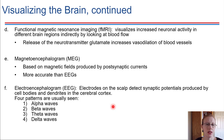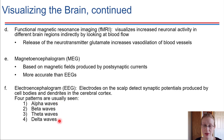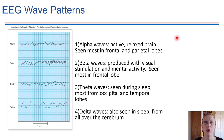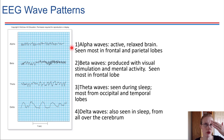EEGs allow us to see different brainwave patterns, and there are four characteristic brainwave patterns: alpha, beta, theta, and delta waves. Alpha waves are the types of waves that exist if you're awake but relaxed. These seem to come mostly from the frontal and parietal lobes of the brain. So if you're awake and relaxed, those lobes will be making alpha waves.